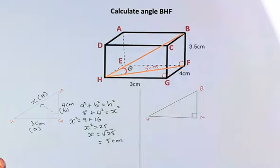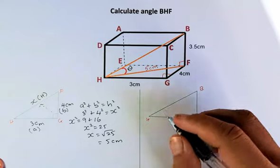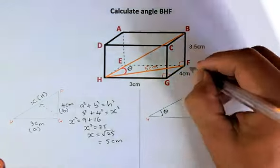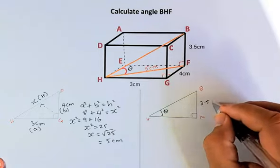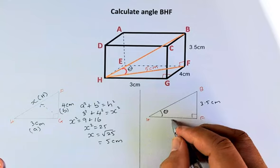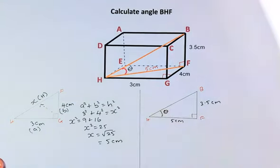So we're going to put BFH into a new triangle. And then we are going to calculate the angle theta. And then we're going to put the value BF is 3.5. And then we have found earlier that HF is 5cm.